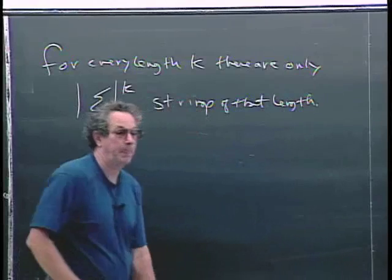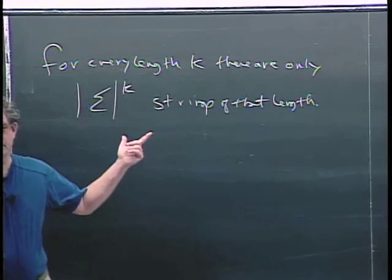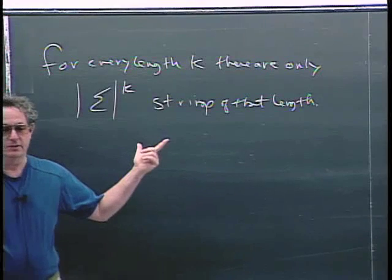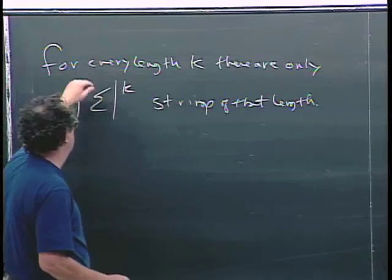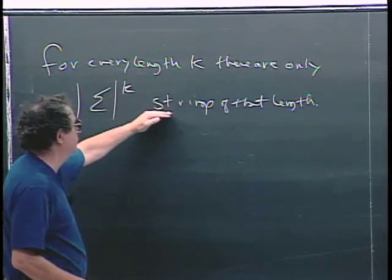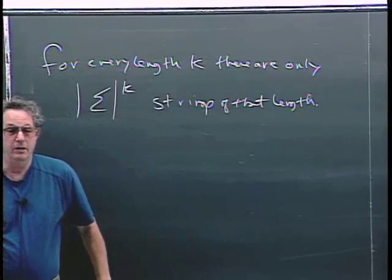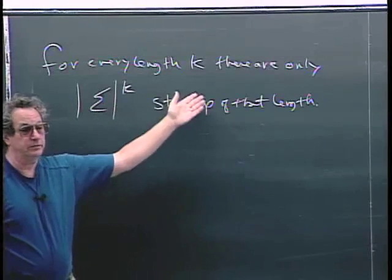Some of those strings describe a Turing machine, and most of them don't. But certainly within these strings, if there's a Turing machine that can be described in K symbols, it's going to be within the set of strings.